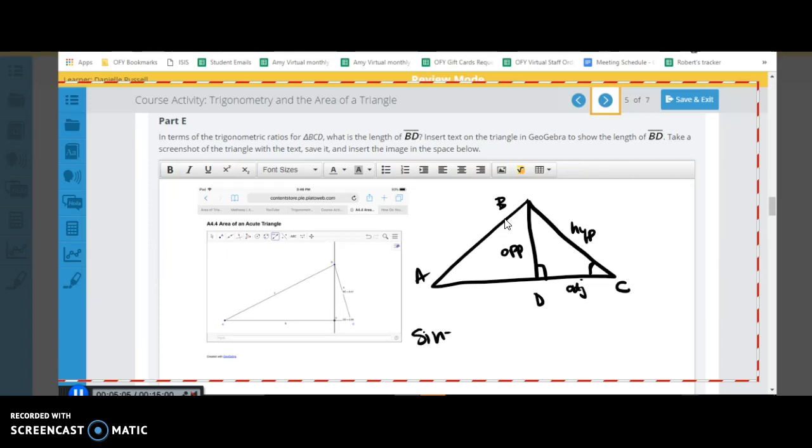Remember that sine is equal to opposite over hypotenuse. So in this case, if we do sine of C, that's going to be equal to the opposite, which is BD, over the hypotenuse here, which is little a. And so now the same thing, we want to try to find BD. Right now we need to solve it for BD by multiplying by the denominator, which is A. So we're going to multiply both sides by little a. So we end up getting A times sine C equals BD. Just like before.